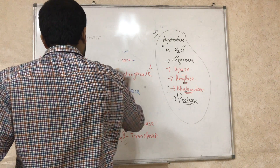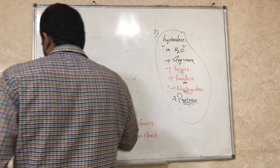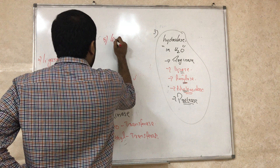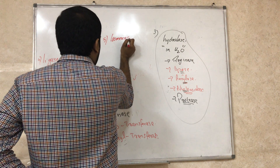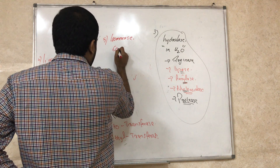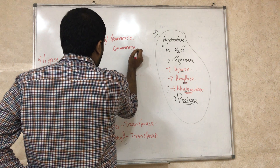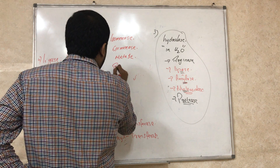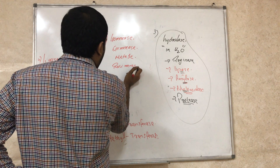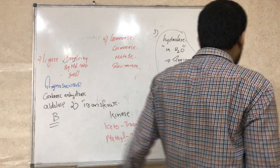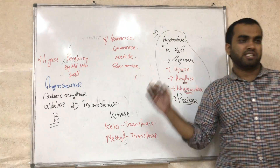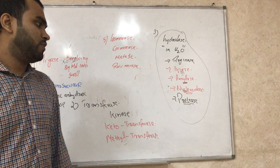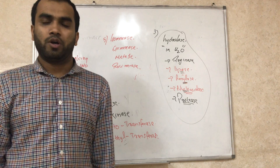The next class is isomerases, which carry out isomerization reactions. Examples include epimerase, mutase, and racemase. These are the major classes of enzymes — just remember these examples as they will be asked.